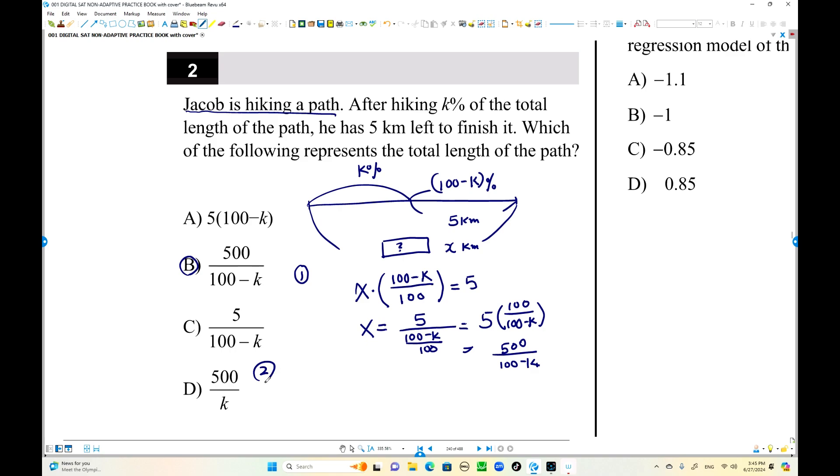Or you can use the proportion too. Five kilometers is 100 minus k percent. Total length is x, but total length percent is 100 percent. So cross multiplication. Five times 100, 500 divided by 100 minus k equals x. You can use either of this method.